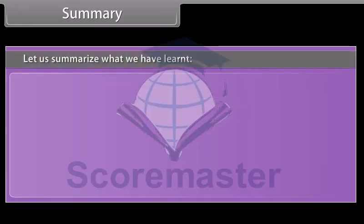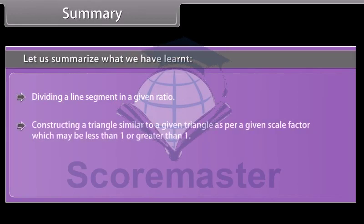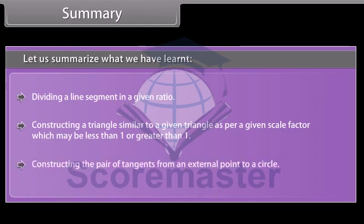Let us summarize what we have learned: dividing a line segment in a given ratio; constructing a triangle similar to a given triangle as per a given scale factor, which may be less than 1 or greater than 1; and constructing a pair of tangents from an external point to a circle.